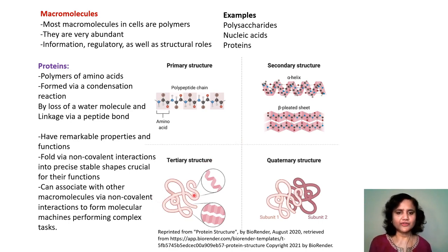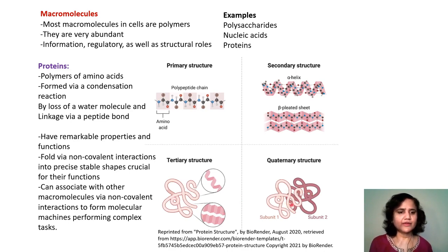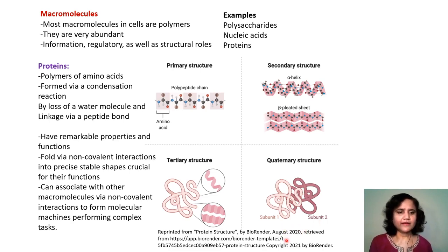Polypeptides can fold via non-covalent interactions into precise stable shapes that are crucial for their functions. There is also another level of folding termed the three-dimensional tertiary structure, where the secondary structural elements are further organized in three-dimensional space. Different polypeptides can come together and associate with each other again by non-covalent bonds — different subunits of protein complexes come together in this way.